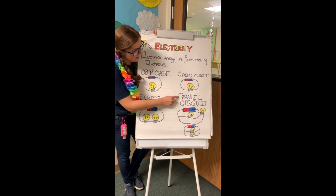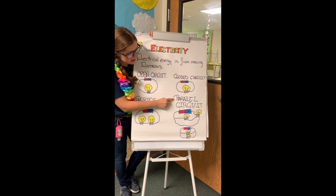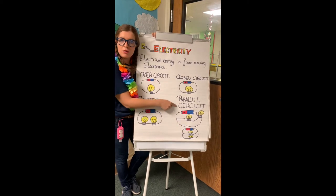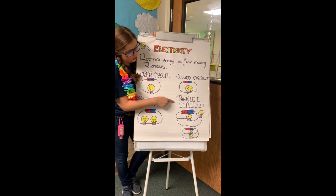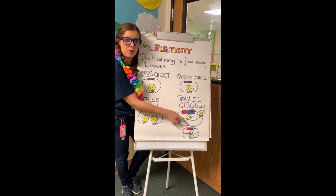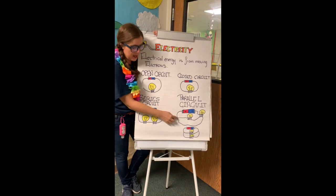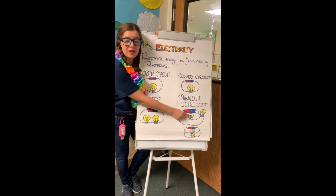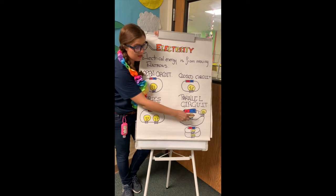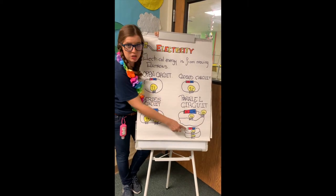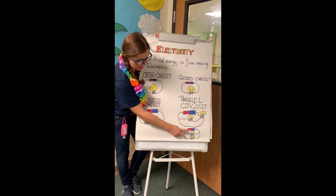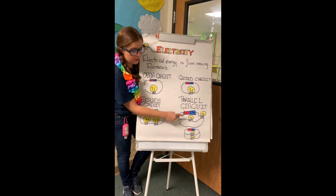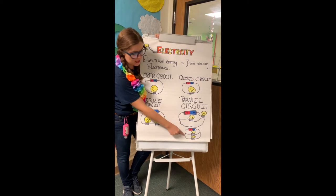And then the parallel circuit — it's when electrical current flows through more than one path. In that case, if one of the bulbs is not working, the rest can continue working because they have separate paths flowing the electricity.